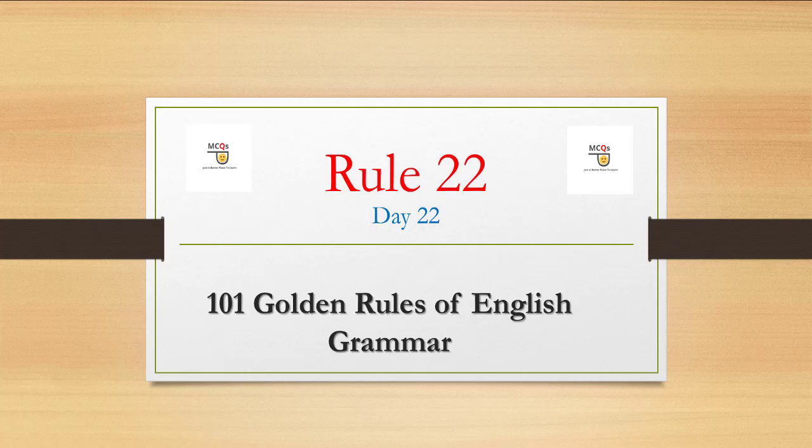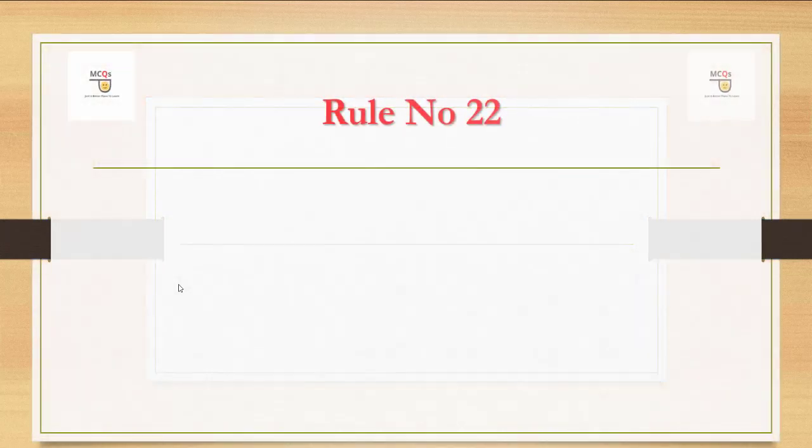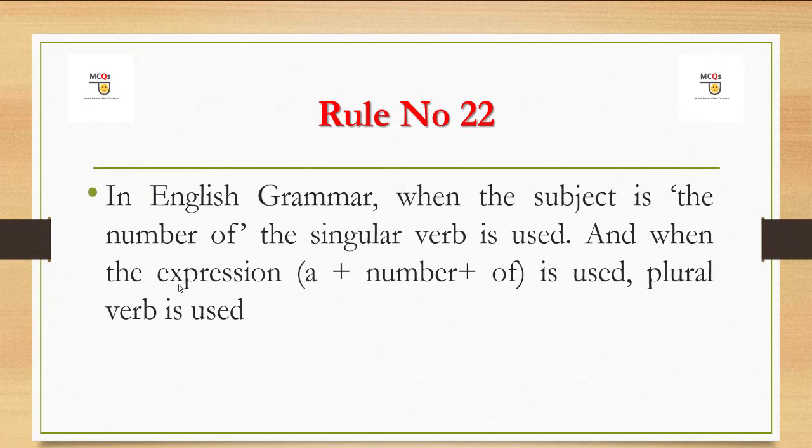So let us learn today's rule, rule number 22. In English grammar, when the subject is 'the number of', the singular verb is used. And when the expression 'a number of' is used, plural verb is used.